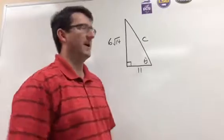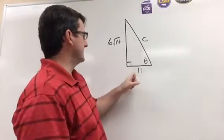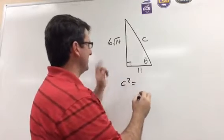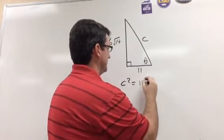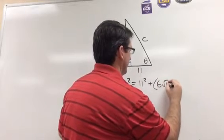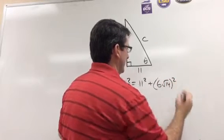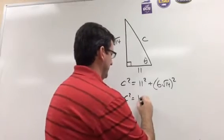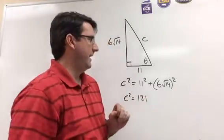So Pythagorean theorem says that C squared is equal to a squared plus b squared. So 11 squared plus 6 square root of 14 squared. So 11 squared is 121, and then...